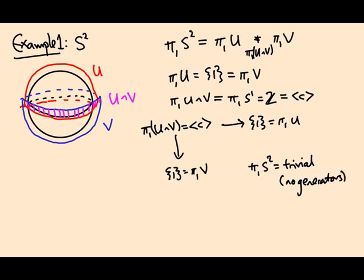Even though π₁ of the intersection is non-trivial, that only enters into the relations. The relations say F(c) equals G(c), but since both F and G map into the trivial group, F(c) = 1 = G(c), so the only relation we get is 1 = 1, which holds in any group. So it's irrelevant that the intersection is not simply connected, and π₁(S²) is trivial — the sphere is simply connected.